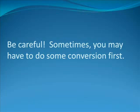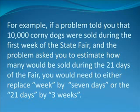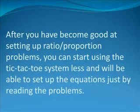Be careful. Sometimes you may have to do some conversion first, which is another ratio-proportion problem, as we showed earlier. For example, if a problem told you that 10,000 corny dogs were sold during the first week of the state fair, and the problem asked you to estimate how many would be sold during 21 days of the fair, you would need to either replace week by seven days, or the 21 days by three weeks.